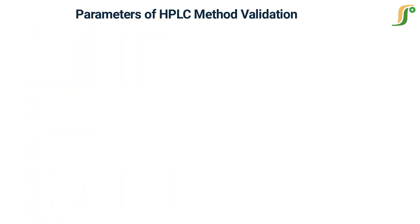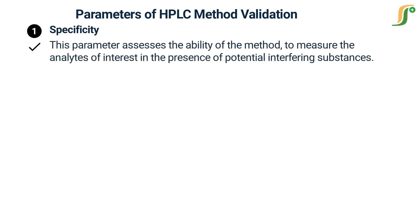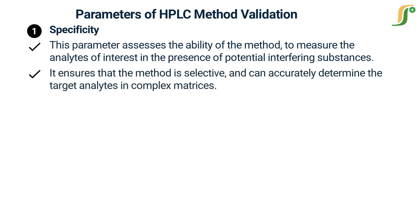The first parameter is specificity. This parameter assesses the ability of the method to measure the analytes of interest in the presence of potential interfering substances. It ensures that the method is selective and can accurately determine the target analytes in complex matrices.